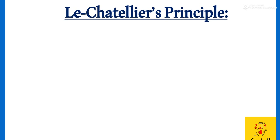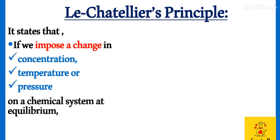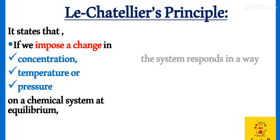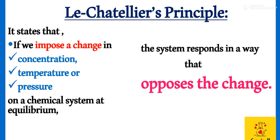First of all, we will see the definition of Le Chatelier's Principle. It states that if we impose a change in concentration, temperature, or pressure on a chemical system at equilibrium, the system responds in a way that opposes the change.